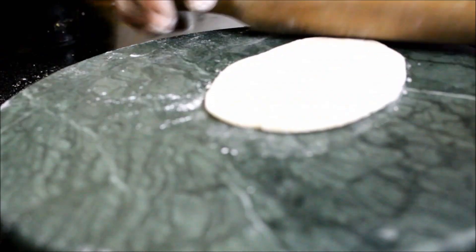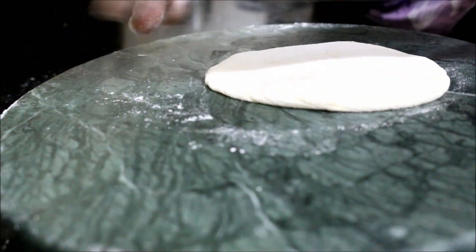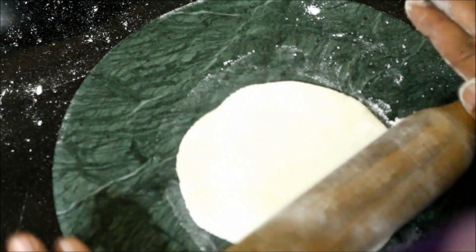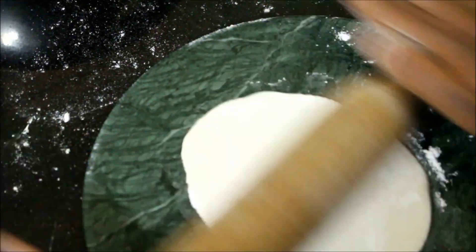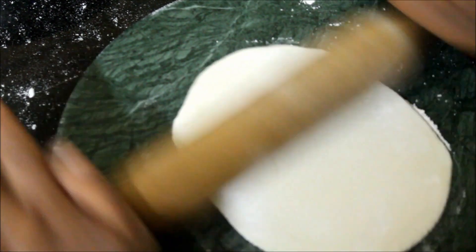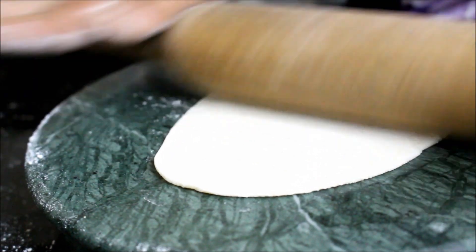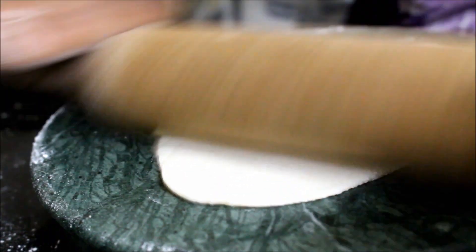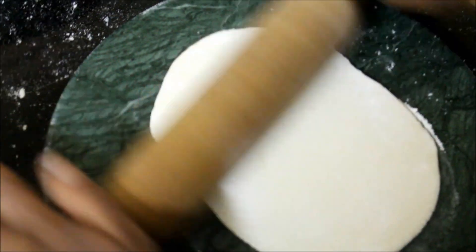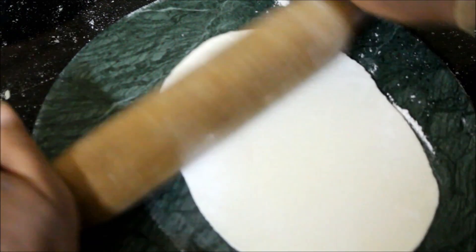Now you need to roll this into very thin rotis. Take your time. Dust your surface well with maida and roll your rotis. It should be nice and thin. Roll all the edges first so that the roti is nice and thin.